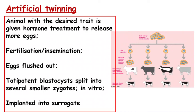Because the eggs have been fertilized, we get totipotent blastocysts forming, and these can be split into several smaller zygotes — essentially inducing twinning — and this is done in vitro in a petri dish. Once all these blastocysts have been split, producing twins from the same egg, they are then implanted into surrogate mothers. All of these individuals will be clones of that original birth cluster, as they come from the same totipotent blastocyst which has been split.